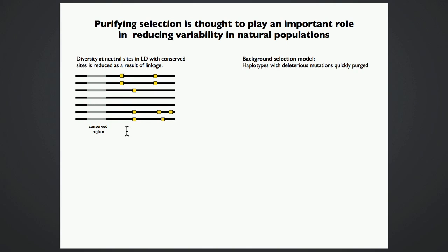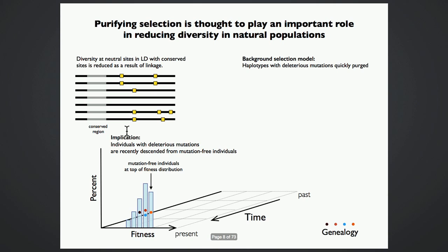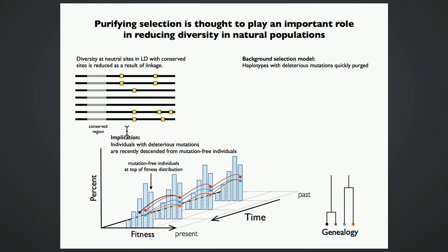This is formalized in the background selection model. And the prediction of this picture is that there will be typically a spread of fitnesses in the population as a result of continuous deleterious mutations that arise, but any deleterious individuals that we may find in the population carry new deleterious alleles, and so they're recently descended from some individual that has no mutation. And so if we were to look back at this population, at the ancestors of our sample backwards in time, we will soon find that they're all in the most fit class. And from this point backwards, the genealogical process is explicitly neutral.